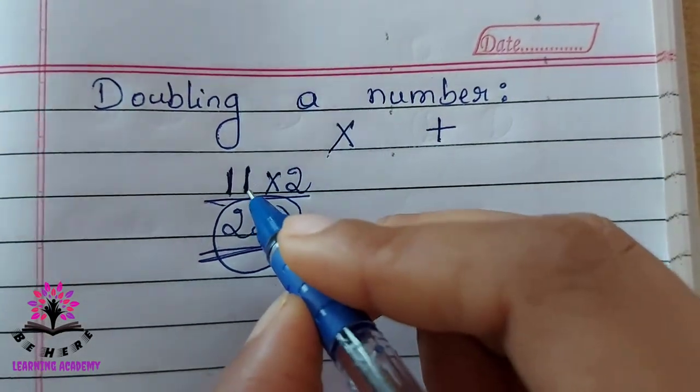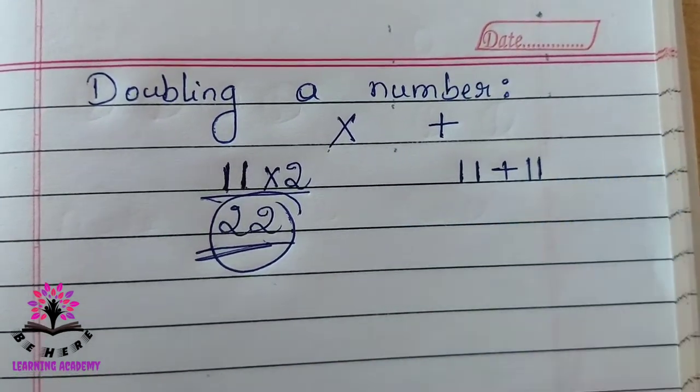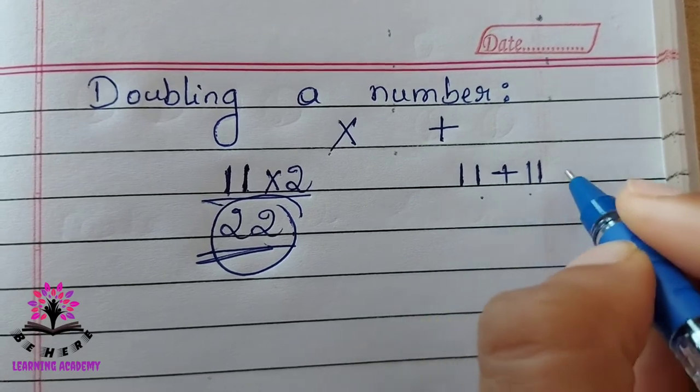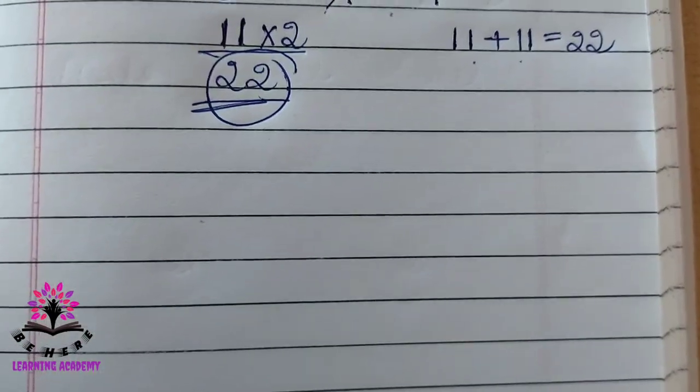If you have to use addition, the given number is 11 right. So you have to add 11 to it. What will be the answer? So 11 plus 11 will be 22. Let us consider one more example.